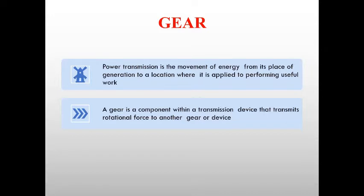What is gear? What can it do? Usually, we can see gear in automobile parts, machineries. Not only on these things, we can also see that in a tape recorder, child toys, and all those things. Power transmission is the movement of energy from its place of generation to a location where it is applied to performing useful work. A gear is a component within a transmission device that transmits rotational force to another gear or device.